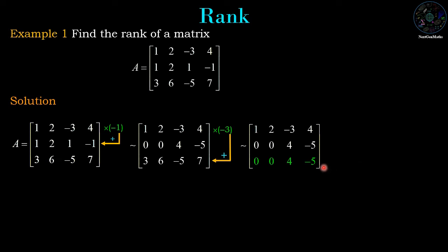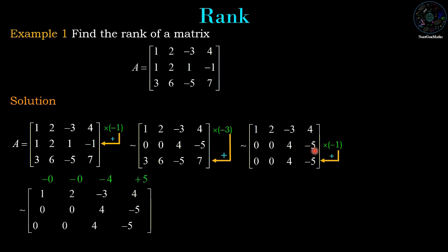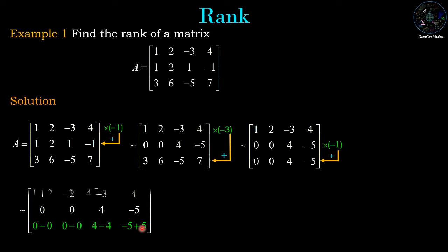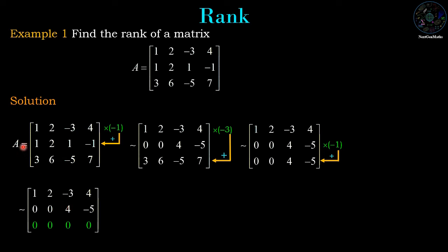In the last operation we make the remaining entry zero by multiplying row 2 by minus 1 and adding it to row 3. Row 2 multiplied by -1 gives 0, 0, -4, 5. Adding to current row 3: 0, 0, 4-4=0, -5+5=0. This is the row echelon form of matrix A, and the number of nonzero rows is 2, therefore the rank of matrix A is 2.